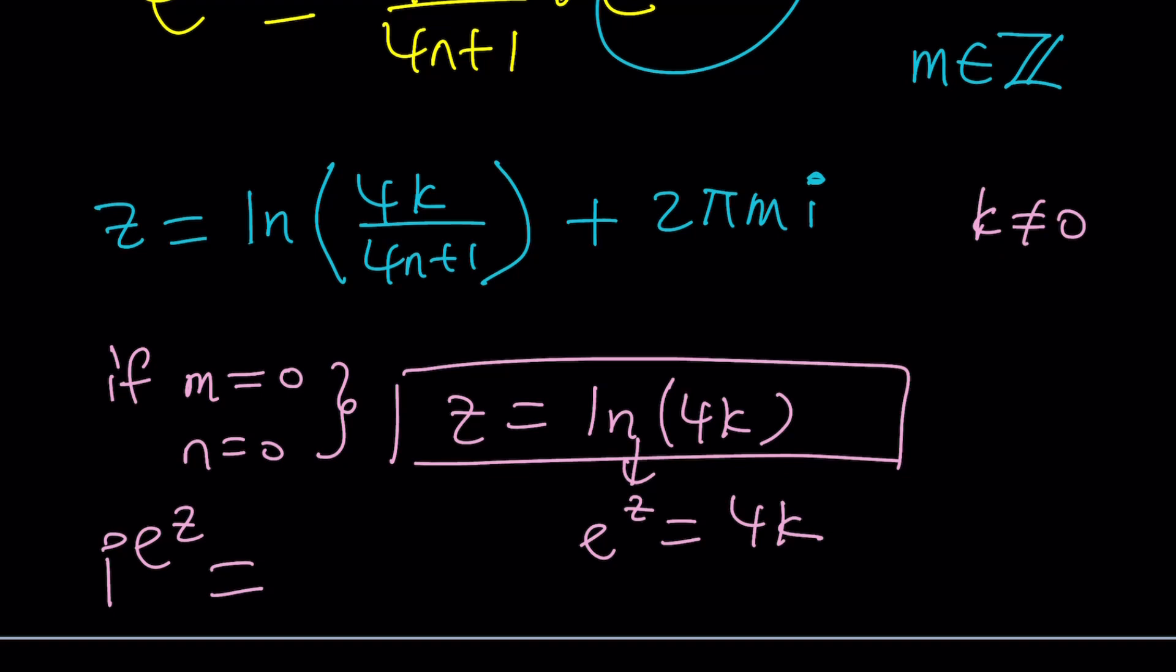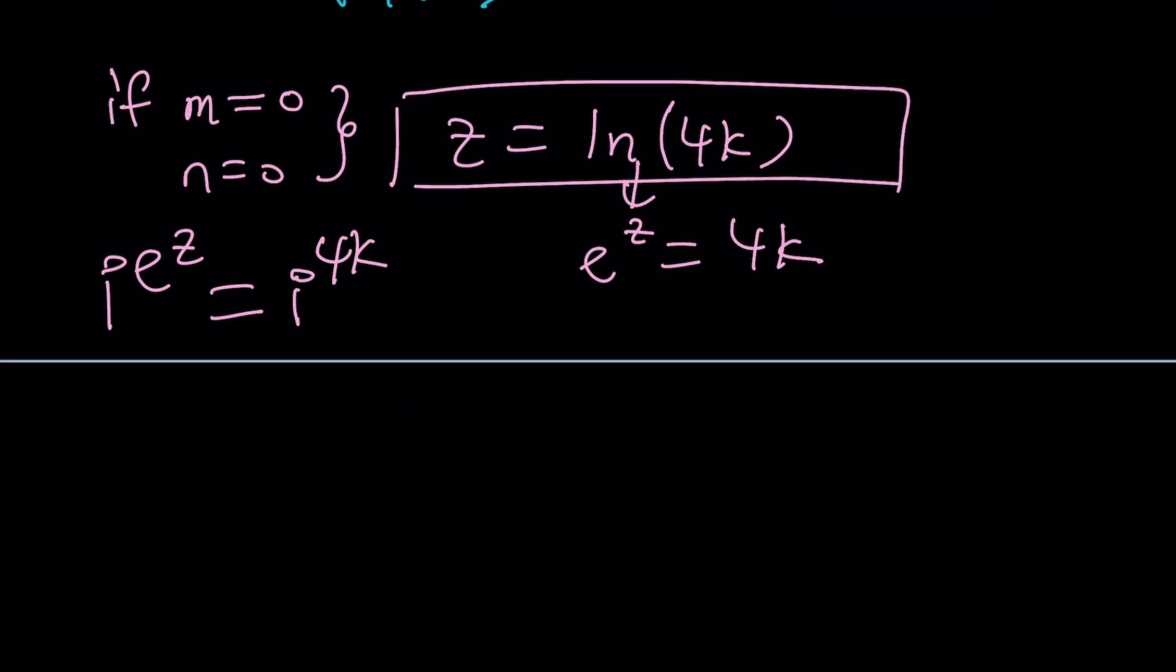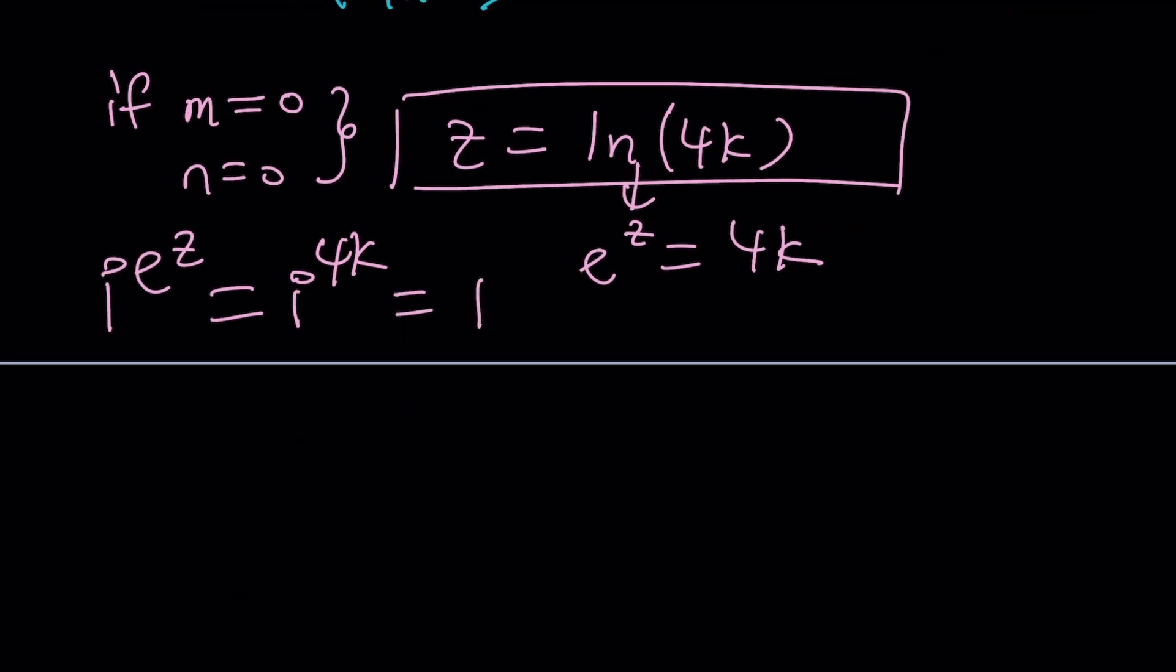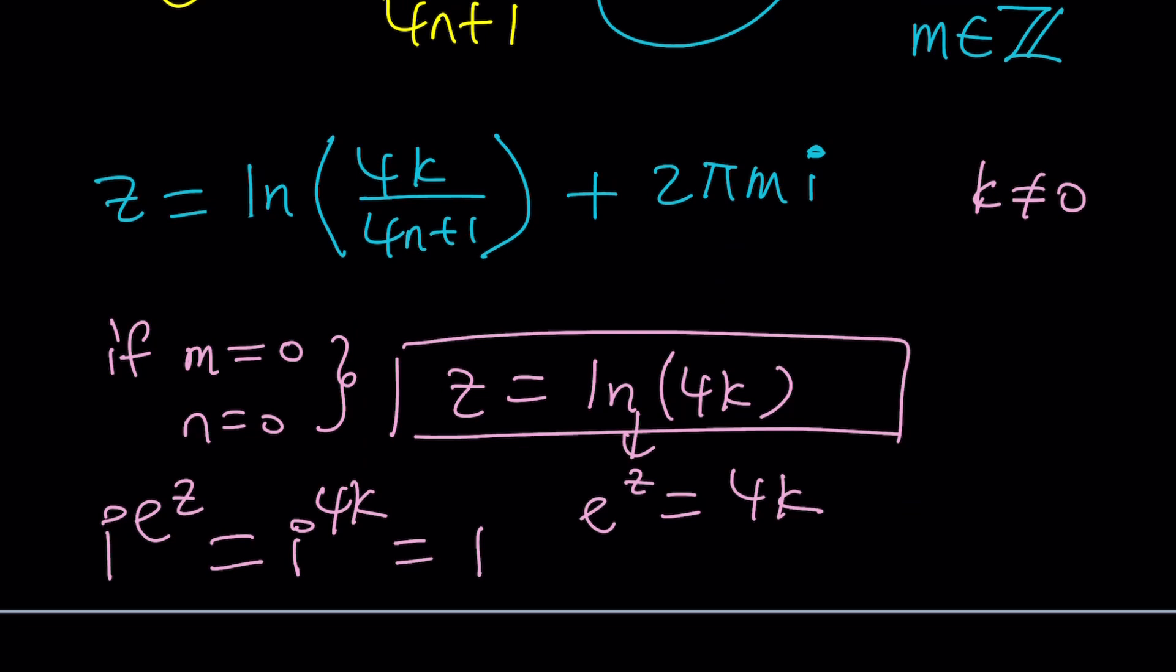By definition, because e to the ln 4k is just 4k, so this is going to be i to the power 4k. As you know, 4k is a multiple of 4 because k is an integer, and this is always 1, so you can see that this satisfies.